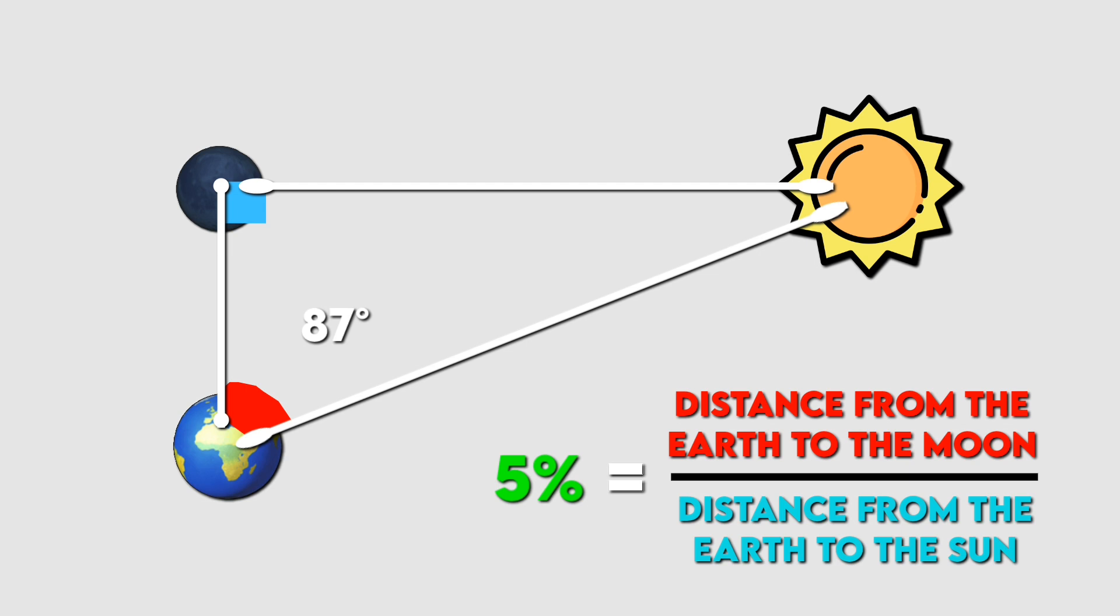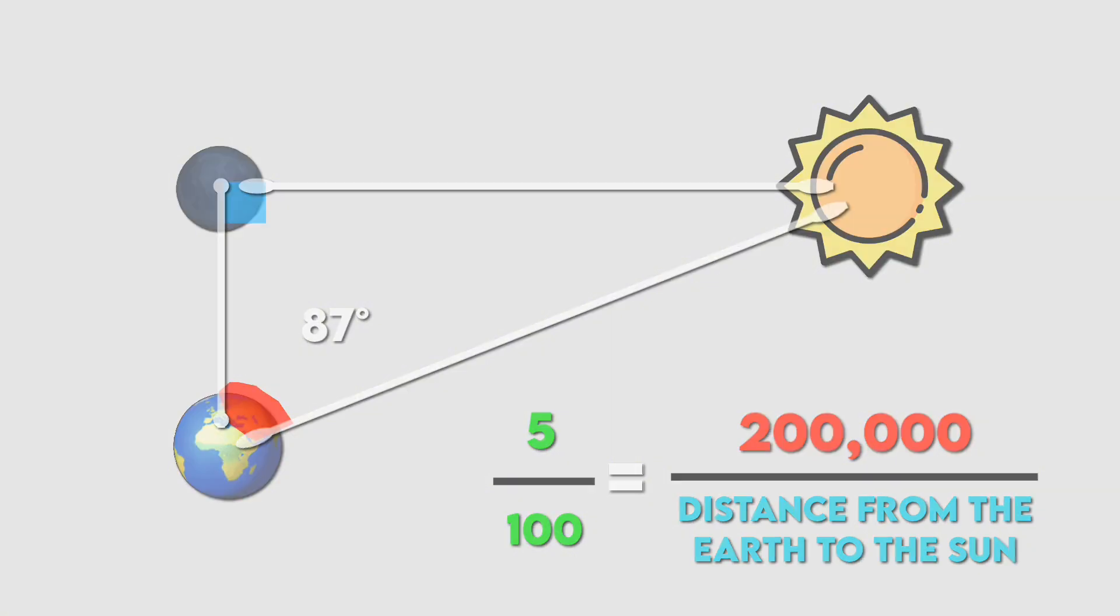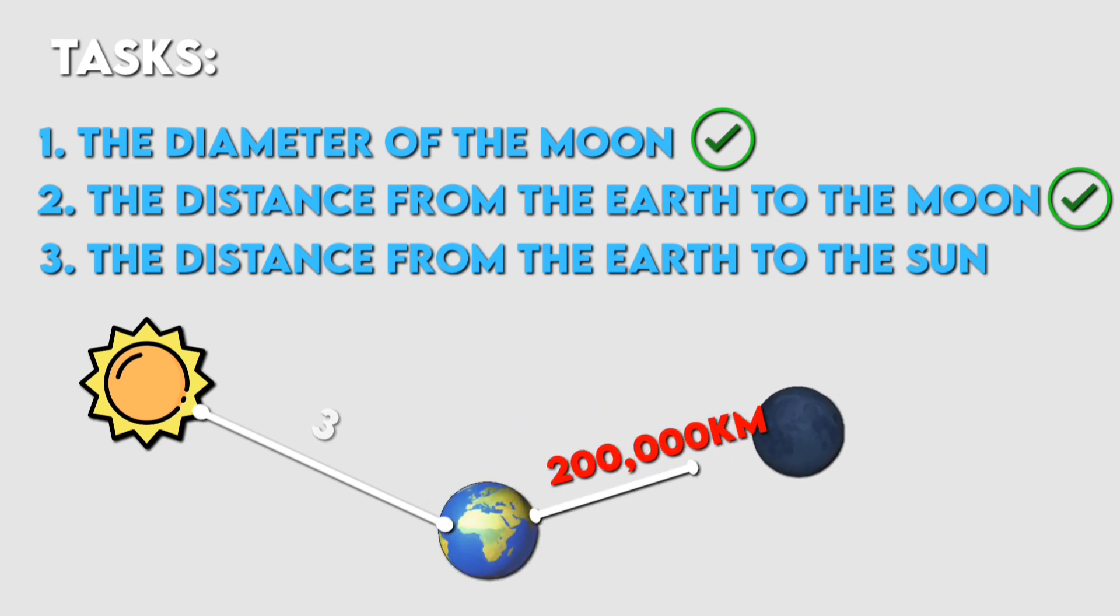Since Aristarchus had already calculated the Earth-moon distance as 200,000 kilometers, he used a simple proportion to determine the Earth-sun distance: 200,000 kilometers divided by 0.05 equals 4 million kilometers. This result demonstrated that the sun was much farther from the Earth than flat Earth proponents claimed. It also confirmed Eratosthenes' theory that the Earth was spherical.